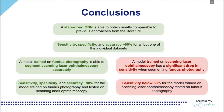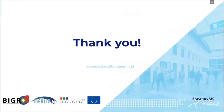To summarize, a general-purpose state-of-the-art CNN is able to obtain results comparable to previous approaches in the literature. The sensitivity, accuracy and specificity of the model is around 90% for all individual datasets in the best patch number and patch size configuration. A model trained on fundus photography is able to segment scanning laser ophthalmoscopy accurately, with values around 90% for sensitivity, specificity and accuracy. The same cannot be said for the model trained on SLO and tested on fundus photography, which shows a drop in sensitivity below 50%.